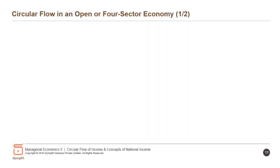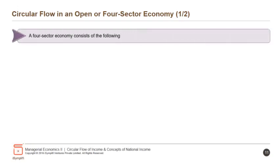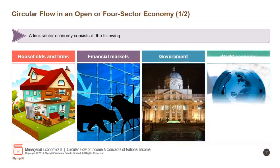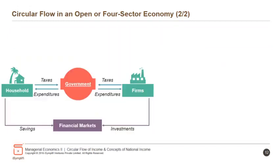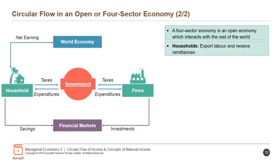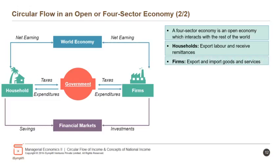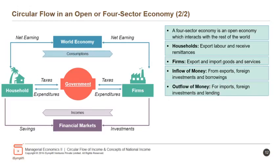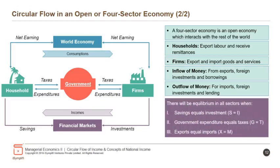In a circular flow in an open or four-sector economy, a four-sector economy consists of: households and firms, financial markets, government and the world economy. It is an open economy which interacts with the rest of the world. Households export labour and receive remittances. Firms export and import goods and services. Inflow of money comes from exports, foreign investments and borrowings. Outflow of money is for imports, foreign investments and lending. There will be equilibrium when savings equals investment (S = I), government expenditure equals taxes (G = T), and exports equal imports (X = M).